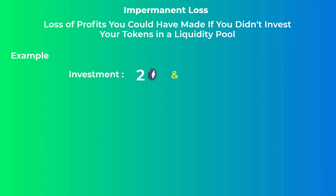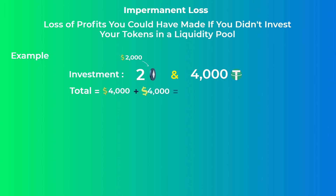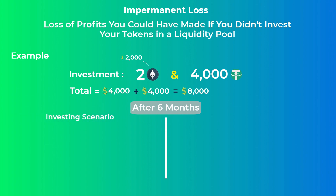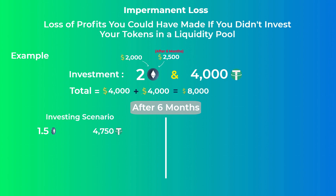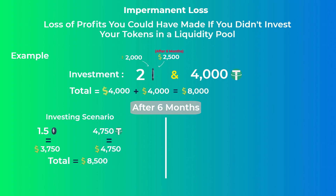Let's say that you invested 2 Ethereum and 4,000 Tether tokens. The price of Ethereum was $2,000, meaning that the total worth of your tokens equals $8,000. Let's say that you left the tokens in the pool for 6 months and when you decided to cash out, the pool gave you 1.5 Ethereum and 4,700 Tether tokens. Let's say the price of Ethereum has jumped to $2,500. So now, your 1.5 Ethereum is worth $3,750 and you have another $4,750 in Tether tokens, making the total value equal $8,500, which means that you made a profit of $500 from your initial $8,000 investment.